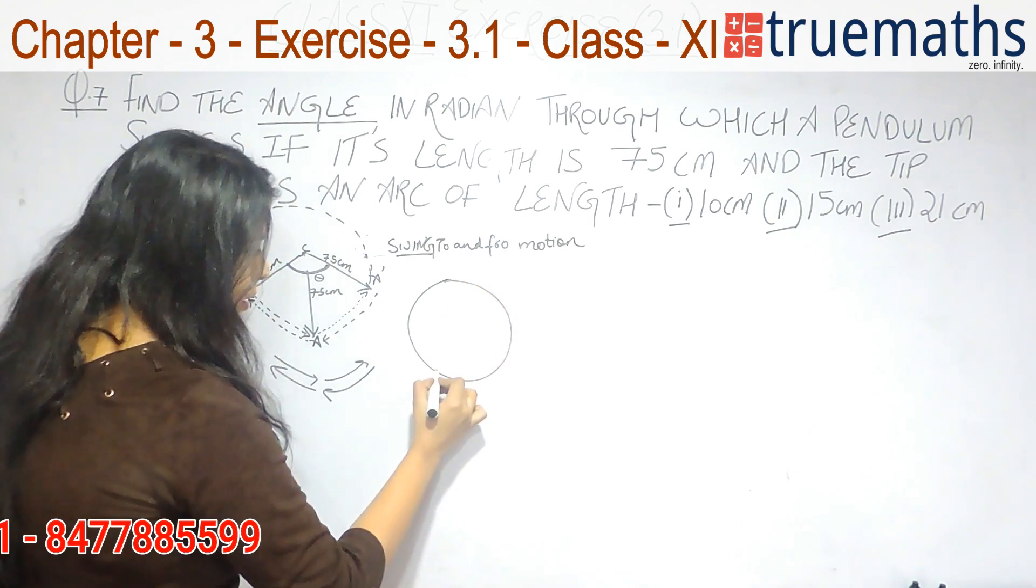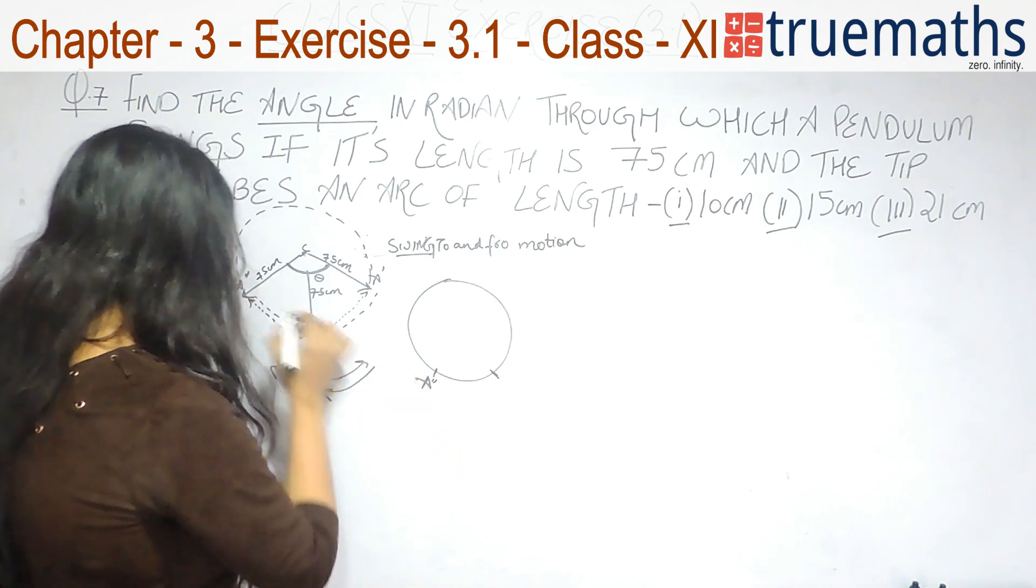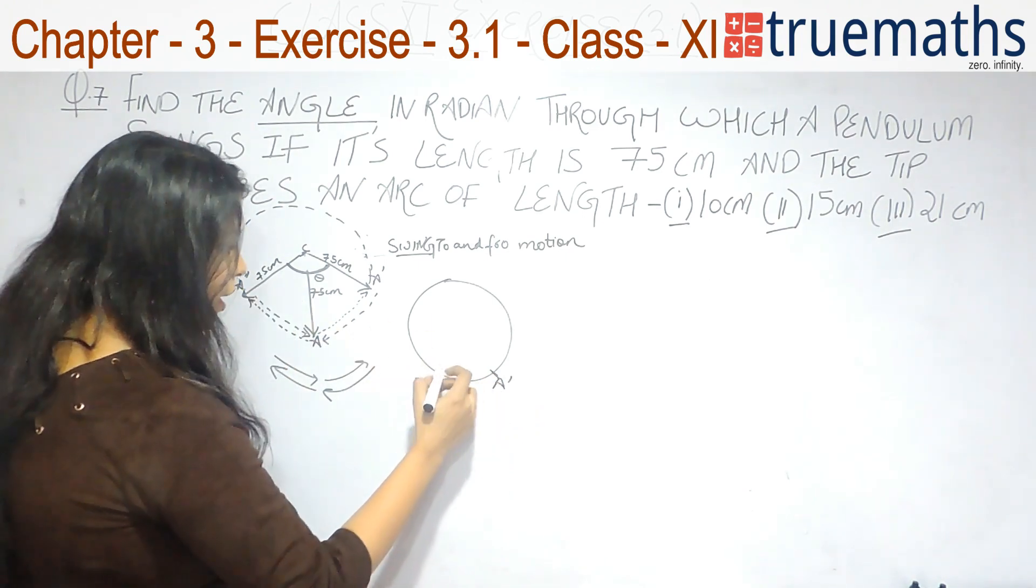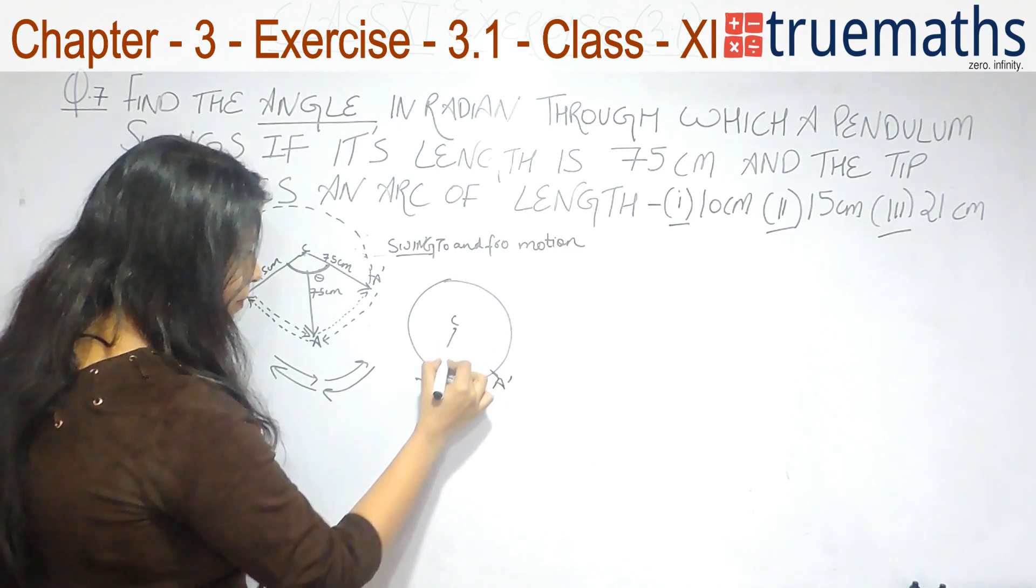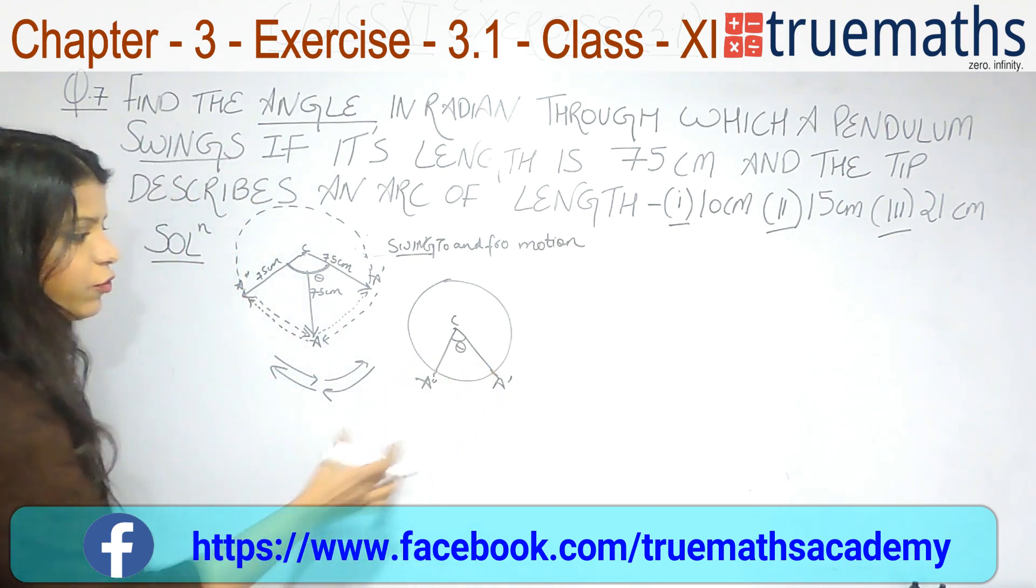This is a circle with an arc between A double dash and A dash, with the center C. And we have to find this theta.